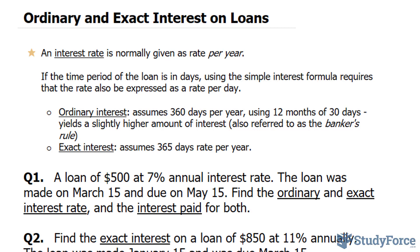There are two types of interest. There's ordinary interest, which assumes 360 days per year using 12 months of 30 days. Since we have 360 as opposed to 365, this yields a slightly higher amount of interest, which is sometimes referred to as the banker's rule. And there's exact interest, which assumes 365 days per year.